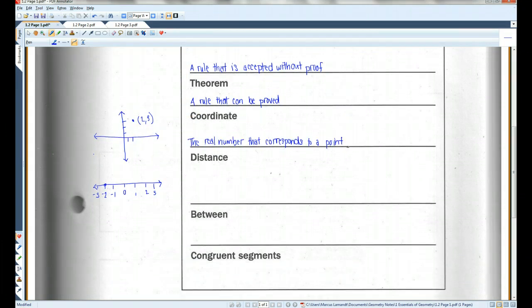Distance. If you were to try to find the distance between two points, say negative 2 and 3, the distance would be if you were to subtract these two numbers and take the absolute value.